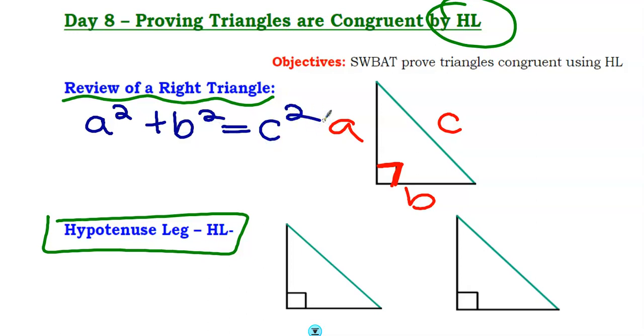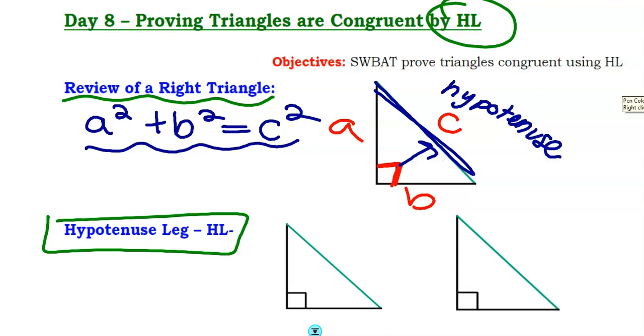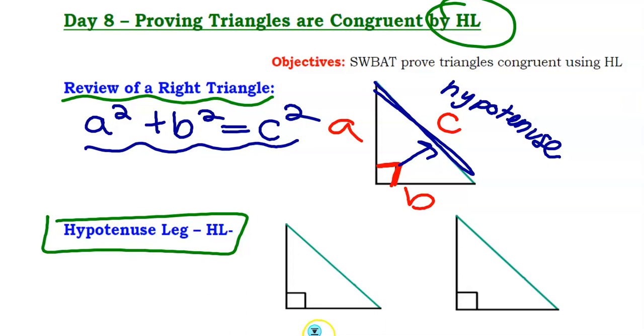So if I have two sides again, I can use this equation to find out what the third side is. So hypotenuse is the side across the way from the right triangle. We keep talking about the opposite sides when we talked about isosceles and equilaterals. Now we're talking about right triangles.